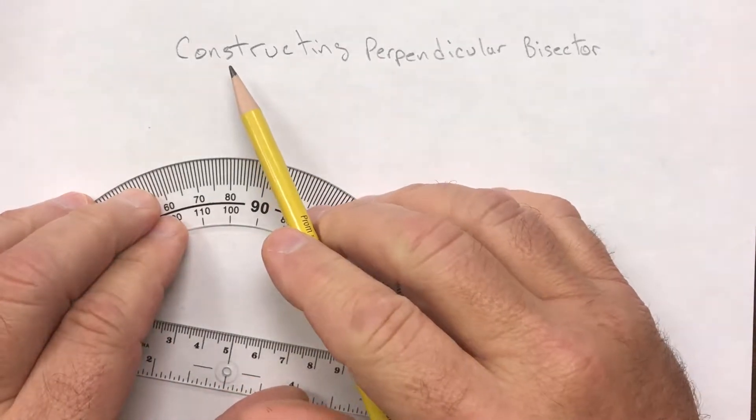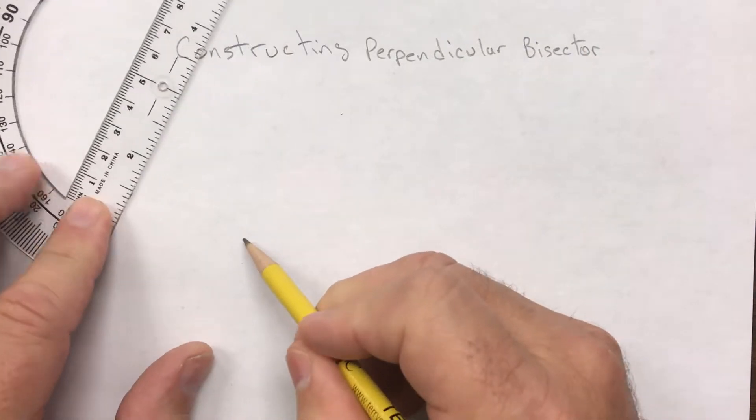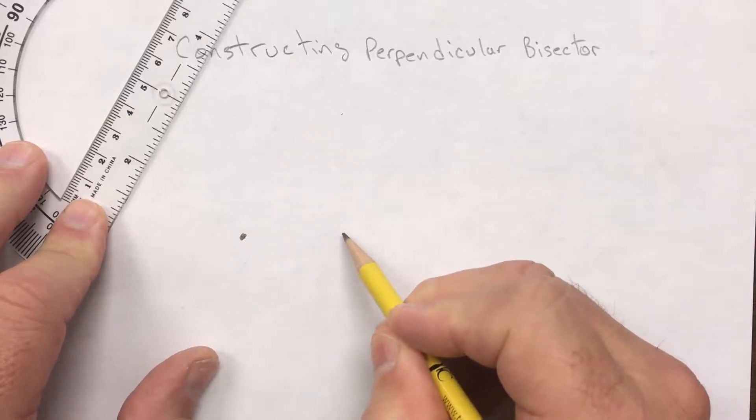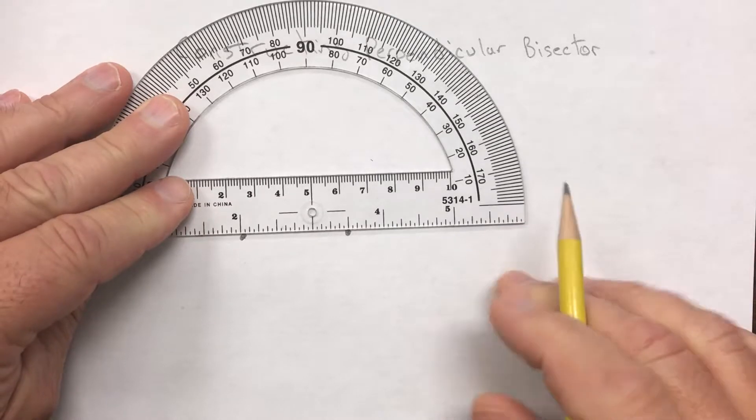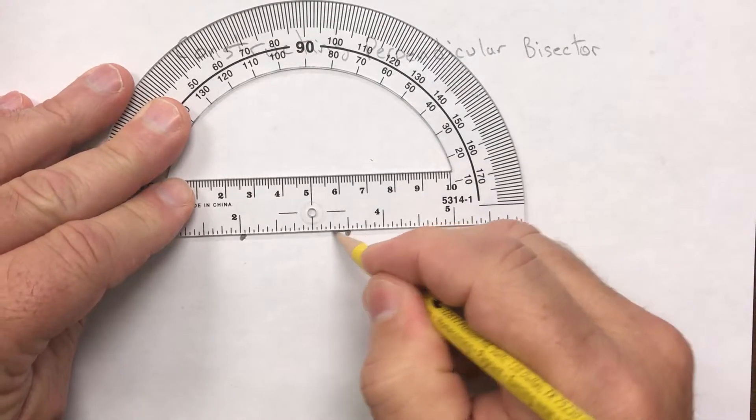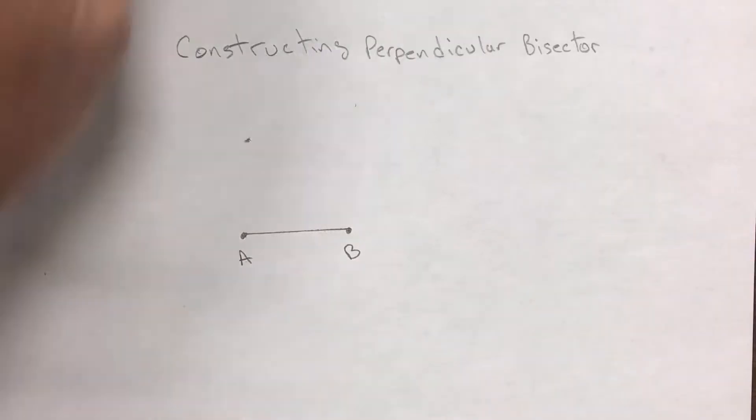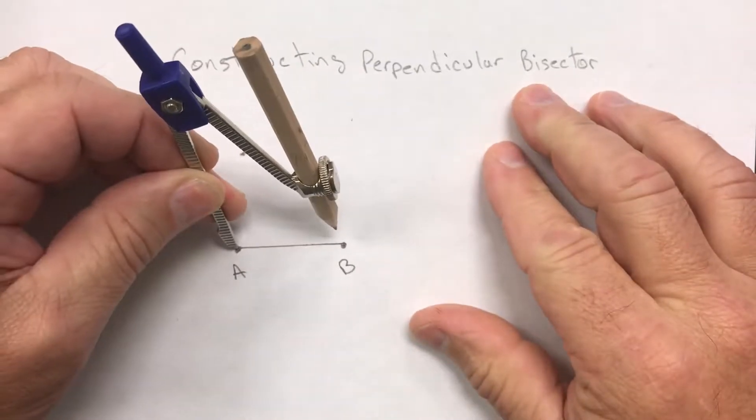Constructing a perpendicular bisector. First, draw two points A and B. Draw your segment connecting those two points and label them A and B. Get your compass and open the compass.